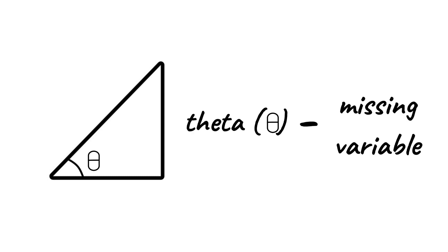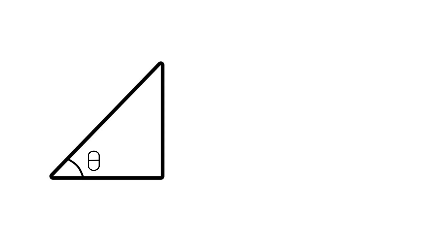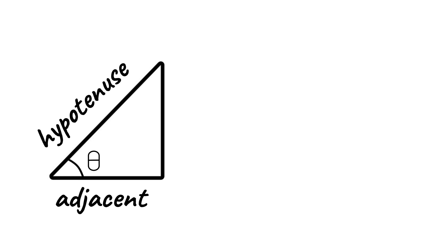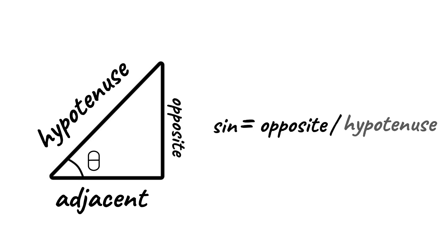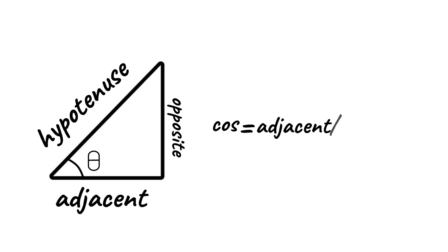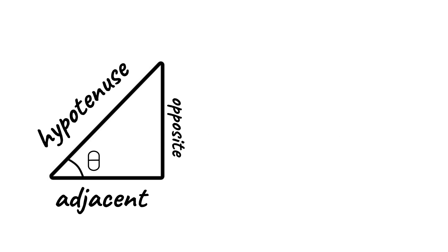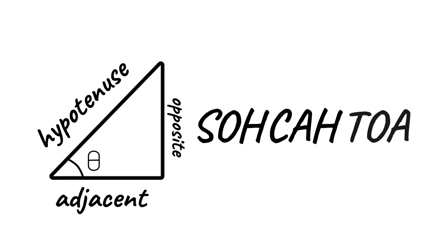I'm going to quickly explain three of the six basic trigonometry functions. To start, we have a right-angled triangle. We'll call this angle theta, which just means it's a missing variable that we have to find. The hypotenuse, or the longest side of our triangle, is the one opposite the right angle. The adjacent side is the one touching theta, and the opposite is the one opposite theta. The sine is equal to the opposite over the hypotenuse, the cosine is equal to the adjacent over the hypotenuse, and the tangent is the opposite over the adjacent. You can remember this with the acronym SOHCAHTOA.